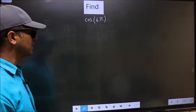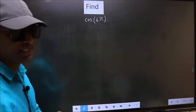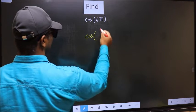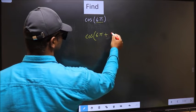Find cos 6π. To find this, we should write cos in place of 6π.